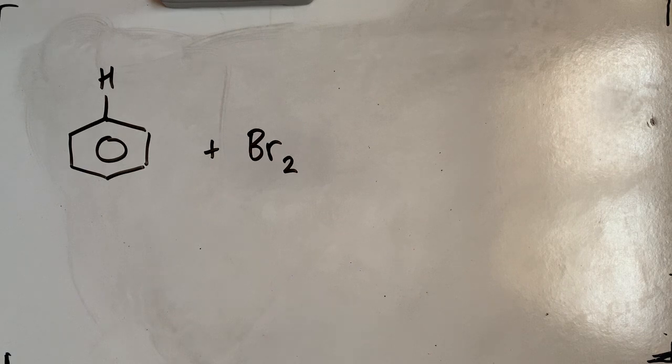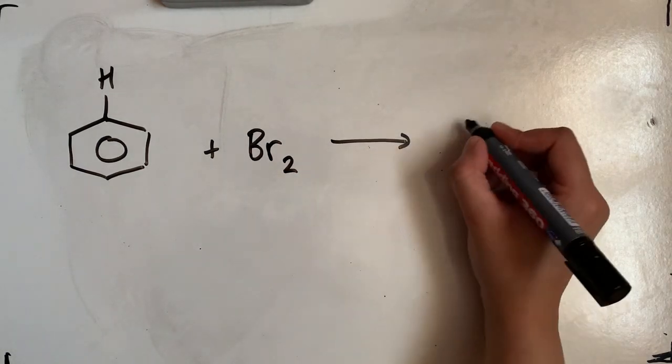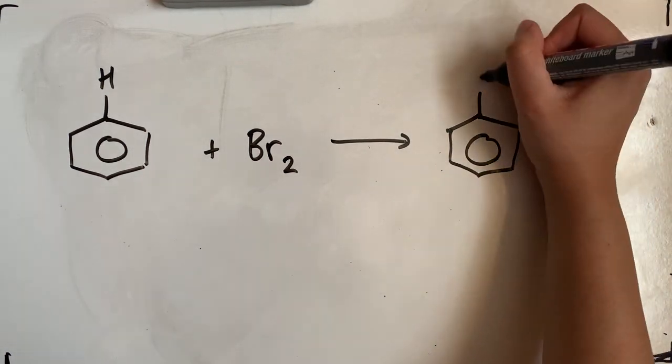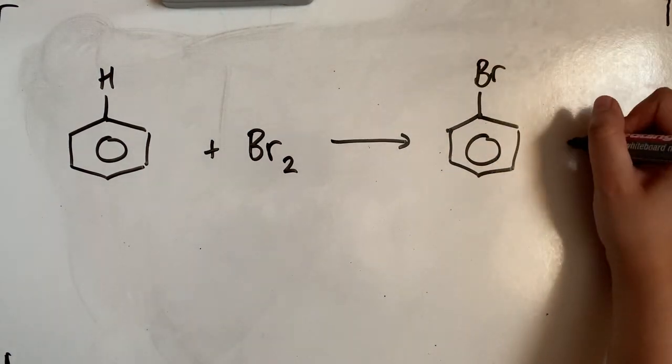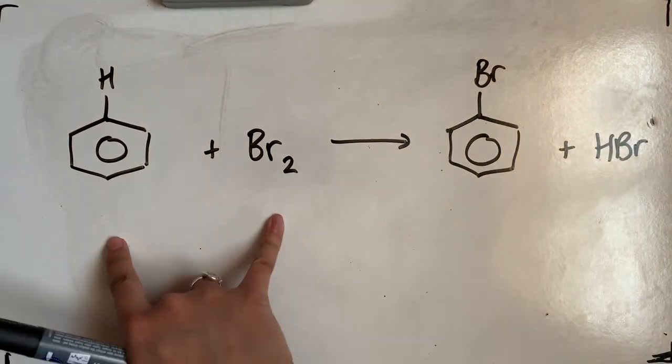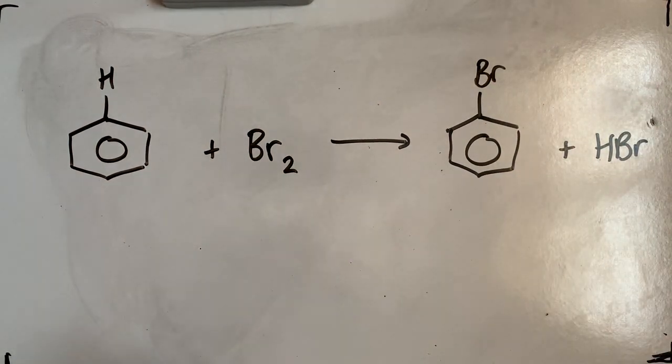In this case, I'm just going to go for bromine, and that hydrogen is going to be substituted by a bromine. Therefore, our other product must be HBr. So two reactants and two products.